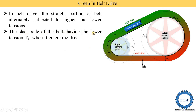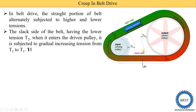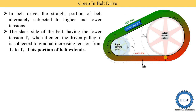The slack side of the belt has lower tension T2. When it enters the driven pulley, the belt is subjected to gradually increasing tension from T2 to T1. Due to this increasing tension, this portion of the belt extends — that is, when the belt passes over the driven pulley, stretching of the belt takes place.